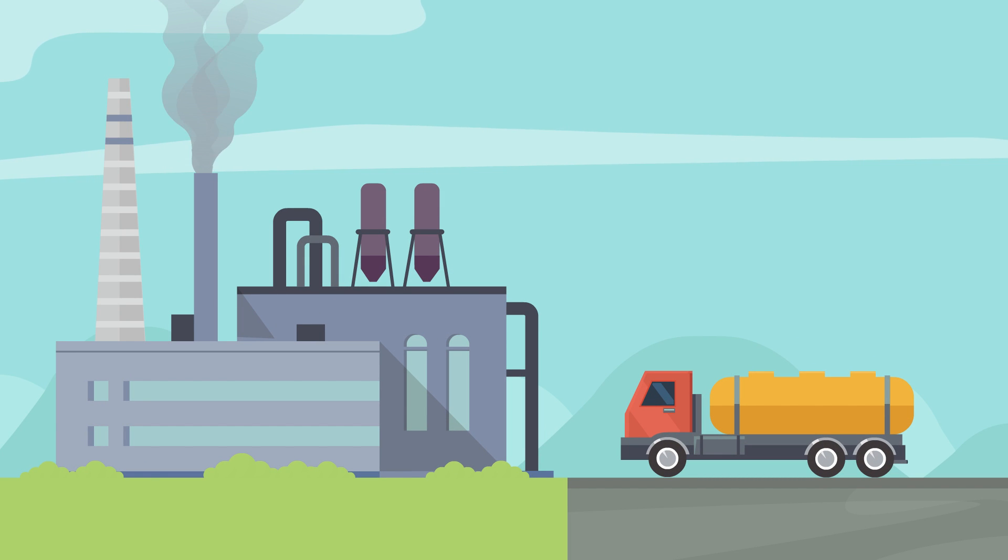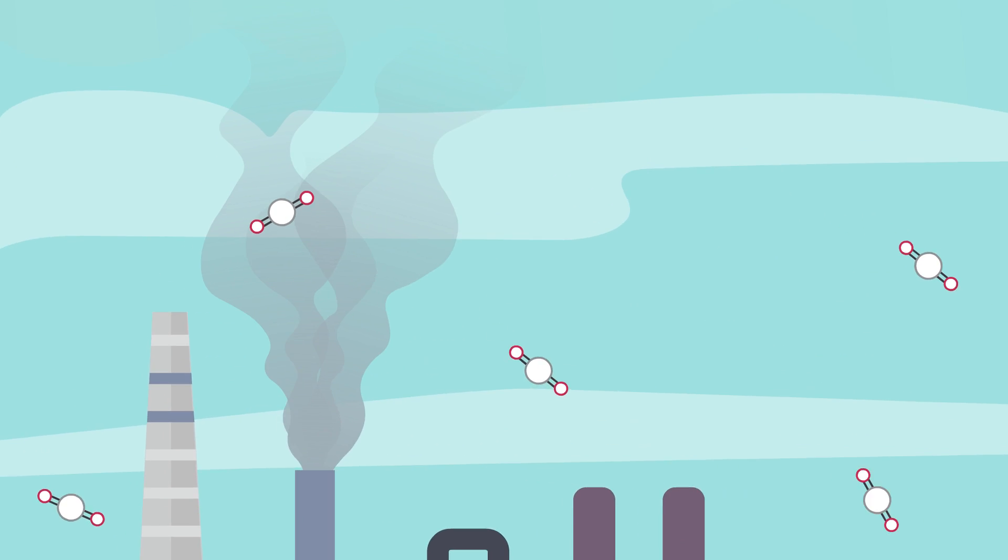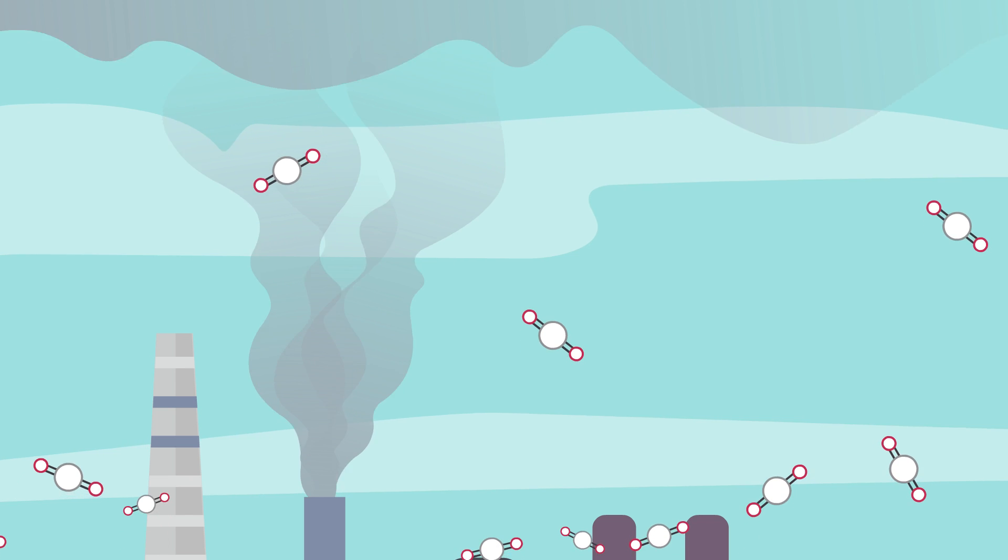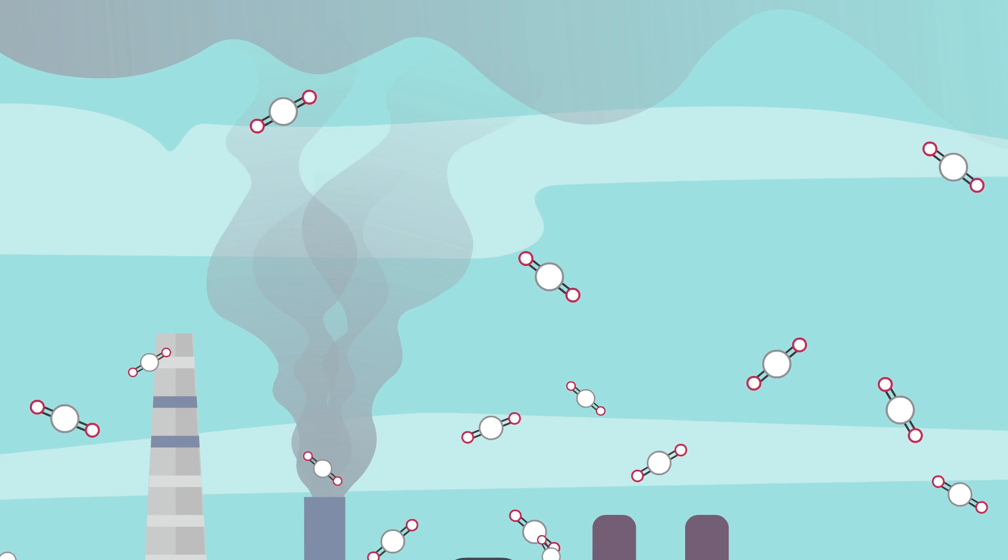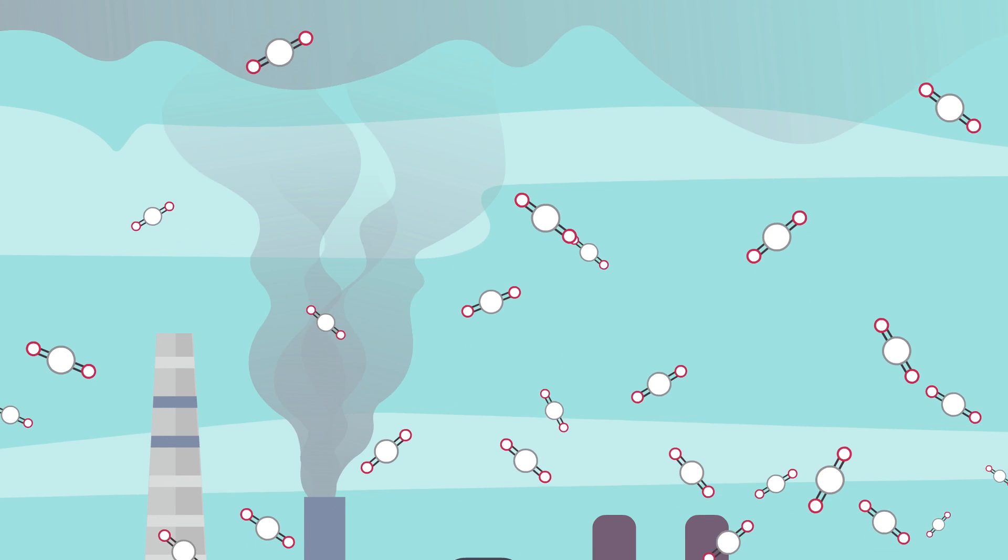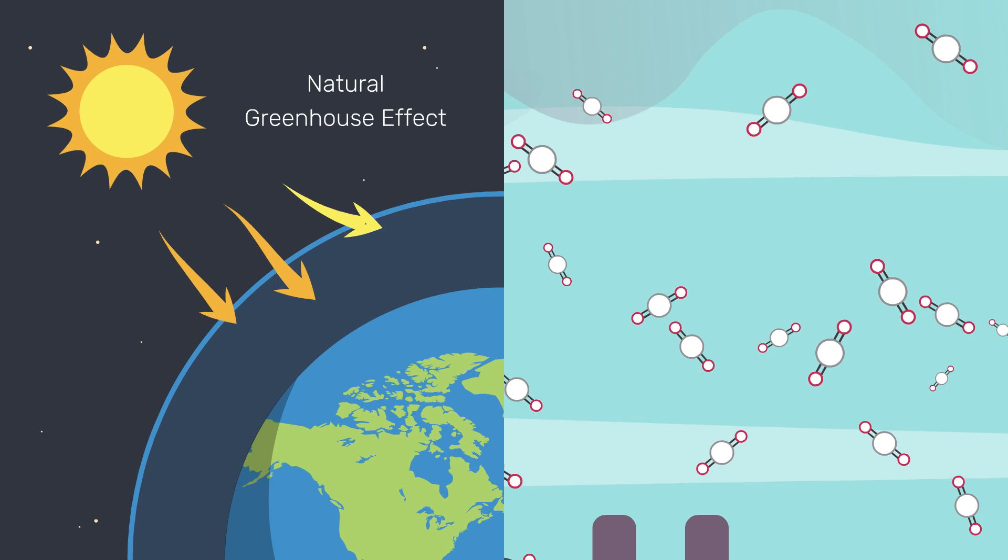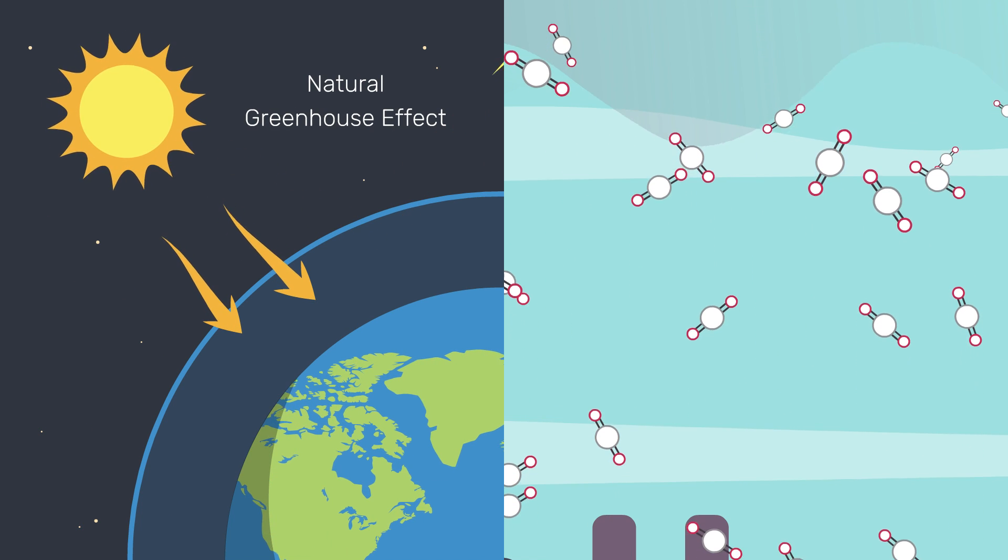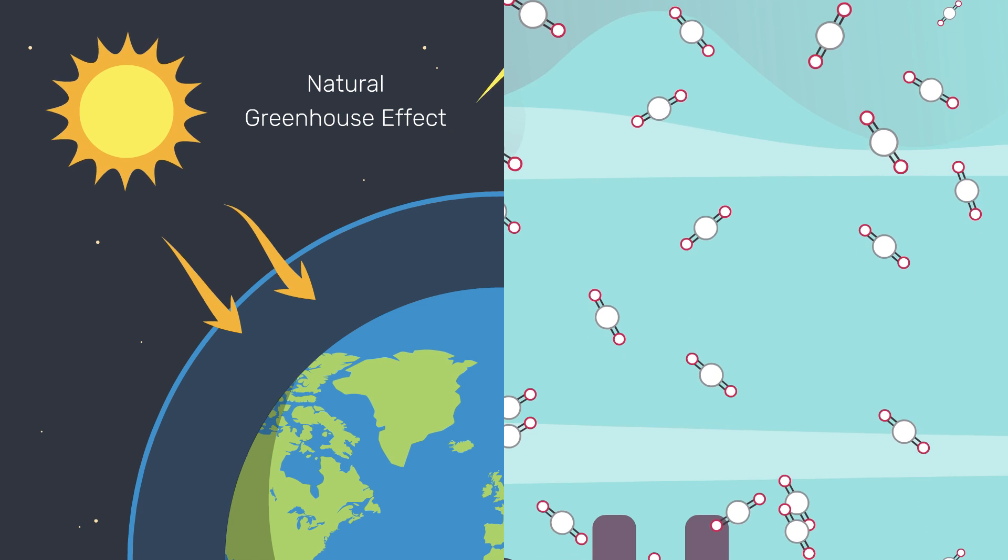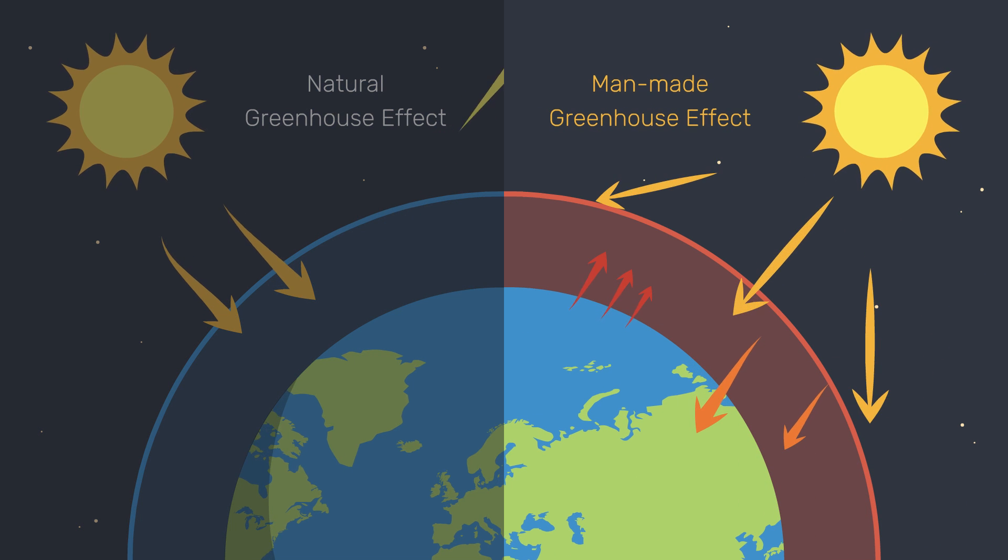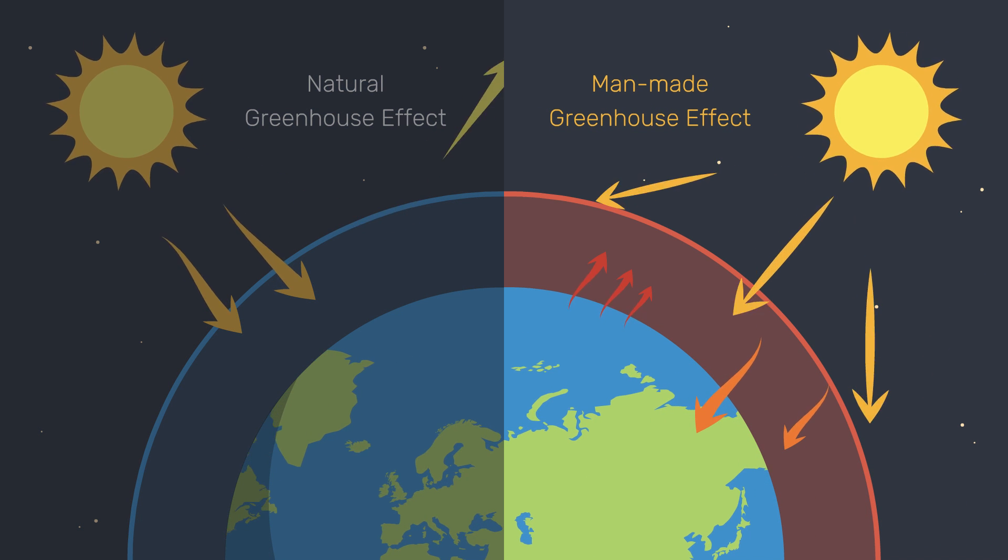Well, when we burn fossil fuels to power our modern world, all of that stored carbon is suddenly released into the atmosphere as a greenhouse gas. The right amount of greenhouse gases are needed to trap the warm rays of the sun and keep the Earth at the right temperature. But, as with most things in life, too much of it is bad.